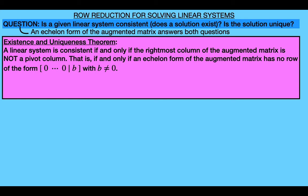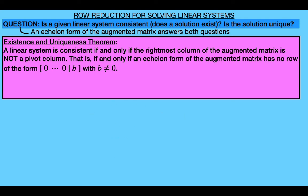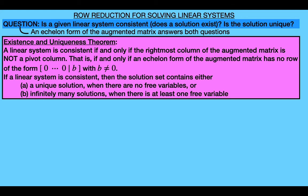You can see intuitively why this makes sense, because if an echelon form of the augmented matrix did have a row of this form, then a solution of the system would have to satisfy this equation, where the left hand side is the sum of each variable multiplied by 0, and the right hand side is the non-zero constant b. But clearly the left hand side is equal to 0 while the right hand side is non-zero. So this statement is false no matter what values we choose for the unknown variables, and a linear system could never be consistent if an echelon form of its matrix had a row like this. Moving on to the uniqueness part of the theorem: if a linear system is consistent, then the solution set contains either a unique solution when there are no free variables, or infinitely many solutions when there is at least one free variable.